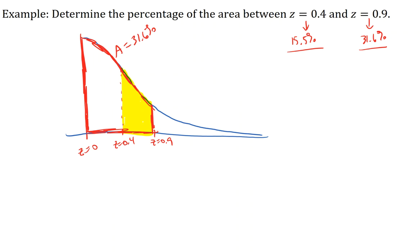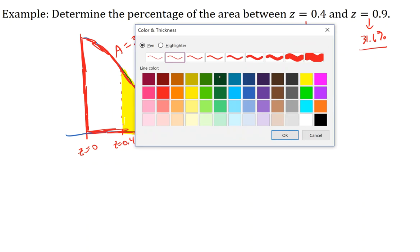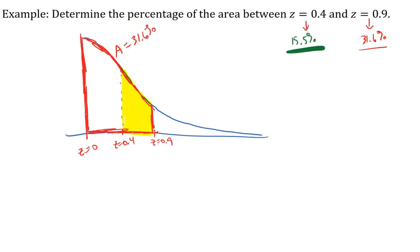So let's think about that. Let me change the color. So this 15.5 percent is the area from the mean to 0.4. So that's 15.5 percent, this area, just in this region here.